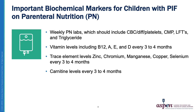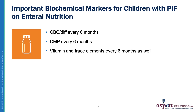For the trace elements, we would like zinc, chromium, manganese, copper, and selenium, and then a carnitine level would be appropriate every three to four months. The indications for biochemical markers with children on enteral nutrition would be a CBC and differential every six months, a CMP every six months, and vitamin and trace elements every six months as well.